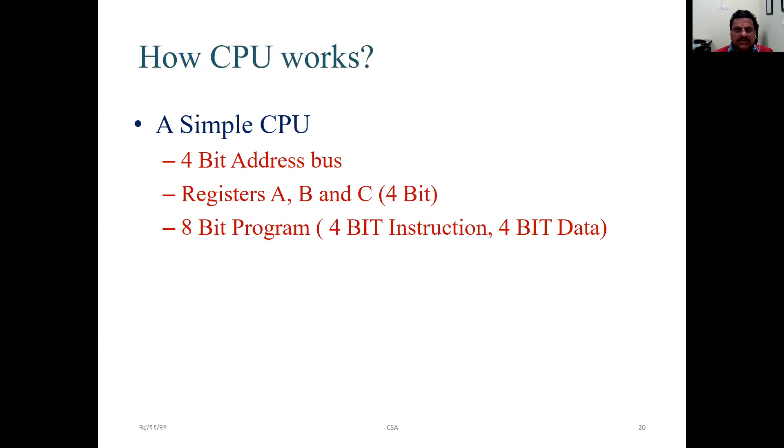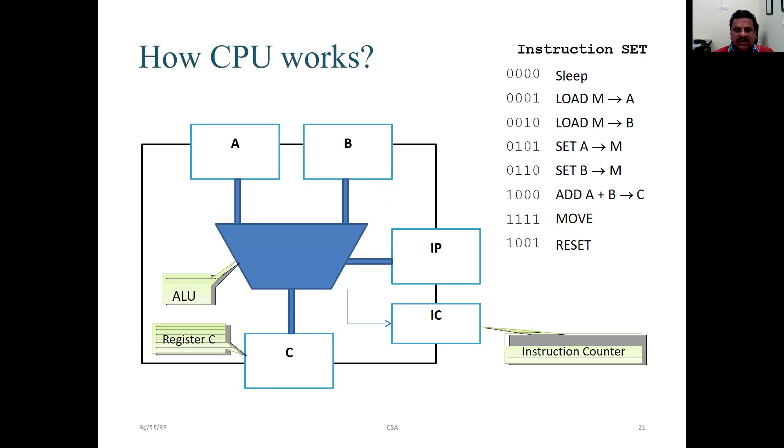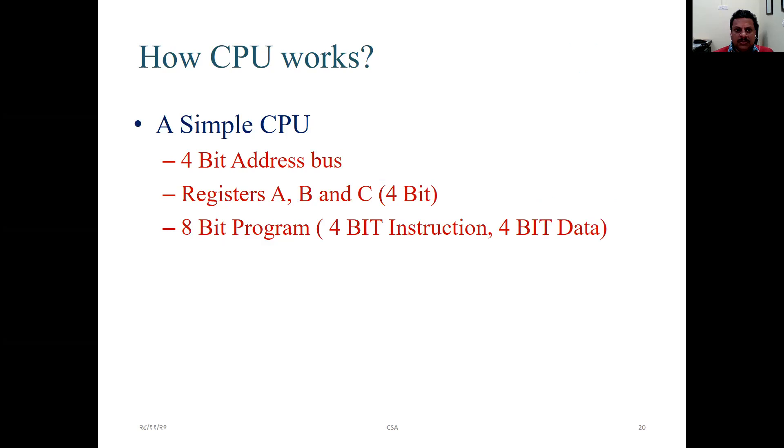How CPU works? A simple CPU with 4-bit address bus, registers ABC, 4-bit, 8-bit program, 4-bit instructions, 4-bit data. And this is how it works. It's already told in CPU flight. Address bus is of 4 bits. So here is address bus.